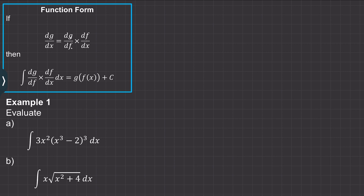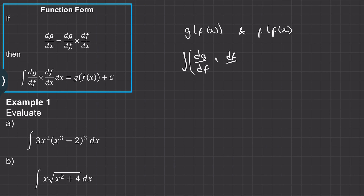If g and f are both functions of x, then when you differentiate g with respect to f and f with respect to x, the df's will cancel and we're left with dg over dx. The reverse chain rule comes from integrating the right hand side — if we take the integral of dg/df multiplied by df/dx with respect to x, the df's and dx cancel, leaving g as a function of x plus a constant term.